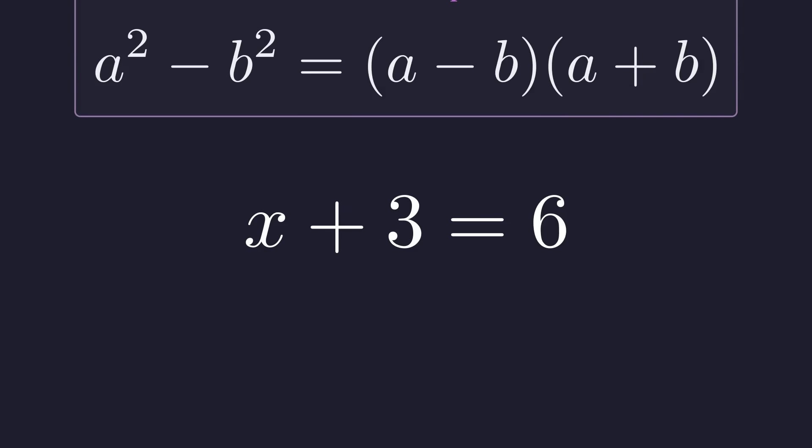Well, as long as x isn't 3, which we already said it can't be, we can cancel and get this much simpler equation: x + 3 = 6.